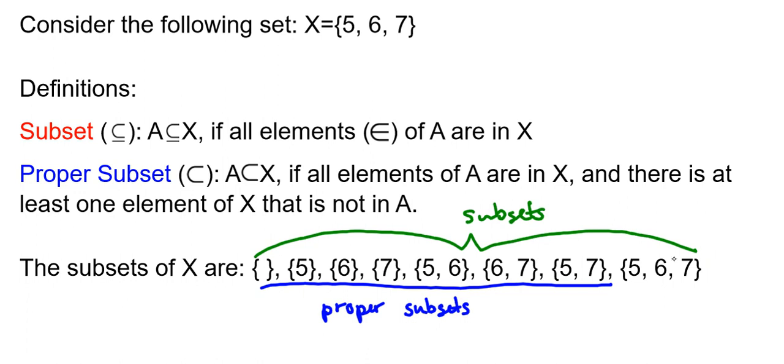Notice this last one here. This is actually also an identical set. So these are equal sets. So if I call this set Y, for example, set Y would be equal to set X. But they would also be subsets of each other.